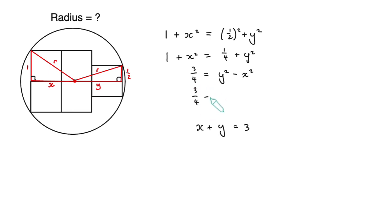Using the famous difference of two squares formula we can rewrite y squared minus x squared as y minus x times y plus x. And y plus x is just the same as x plus y, so I can replace x plus y just with 3 from our second equation. Dividing both sides by 3 we have a quarter equals y minus x.